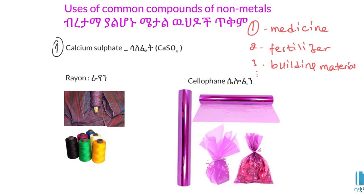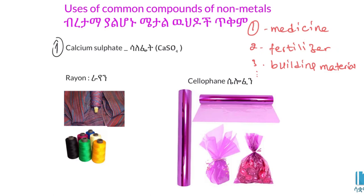Hello everyone, welcome to the use of common compounds of 9 metals. The foundation includes carbon dioxide, building water, cement, gypsum, and this is a 9-metal compound.